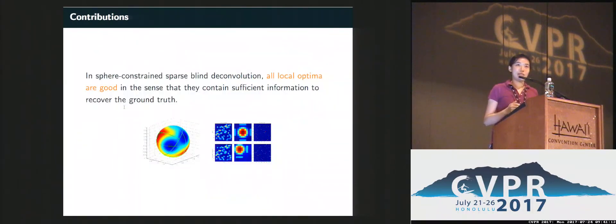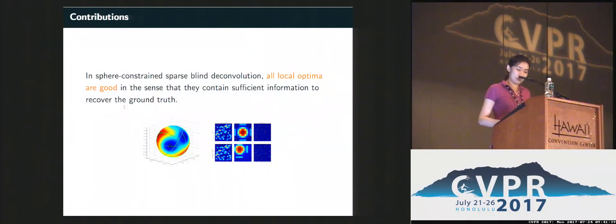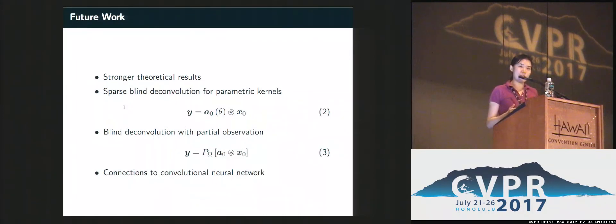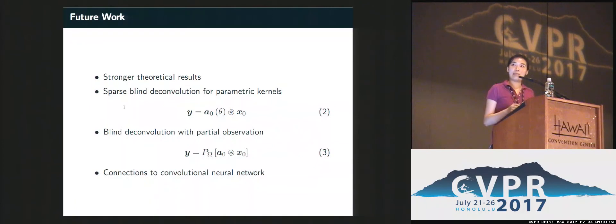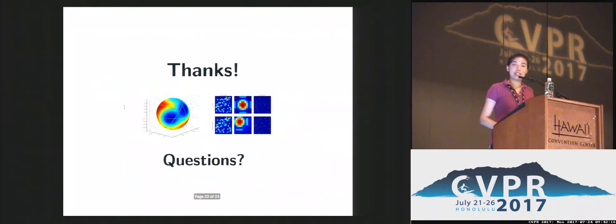The main message of this talk is that once we cast the problem on the right sphere, we have good geometry so that all local optima are good, and our algorithm can recover the ground truth from each local optimum. We showed simulations and experiments to support this, and we also have a theory, though it is somewhat sub-optimal — it currently only works when A is sufficiently sparse. Future work includes pursuing stronger theoretical results for more complicated cases with non-trivial overlapping and other parametric models, as well as exploring connections to convolutional neural networks, where our geometric insights about this well-defined problem might inform algorithm design and theory.